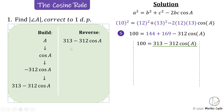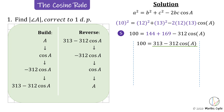The last thing that happens is 313 is added on, so that's the first thing we cancel — by subtracting 313. Then we cancel the negative 312 multiplied by cosine A by dividing by negative 312. Finally, we reverse cosine by taking cosine inverse, which brings us all the way back to A, the angle we are looking for.